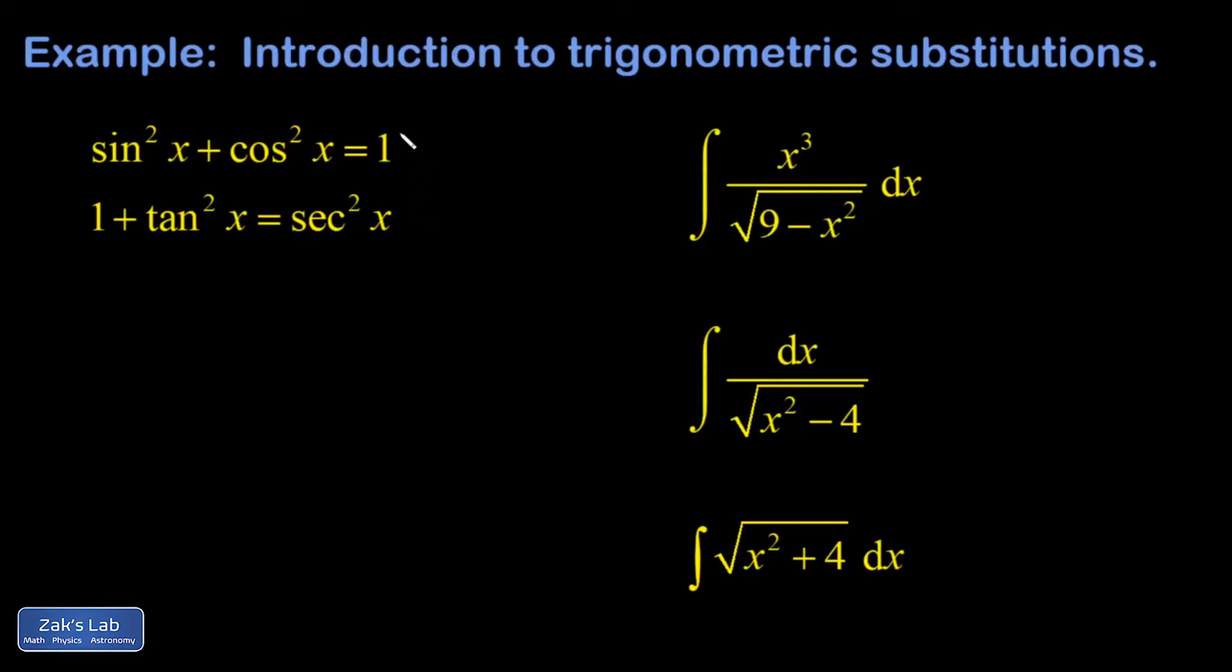On the left here, I have stated two of the Pythagorean identities. The first one comes from looking at the definition of the sine and cosine functions on the unit circle and applying the Pythagorean theorem to that. The second one comes from the first one by dividing both sides by the square of the cosine function. These are the only two that we're going to need for this sort of integral.